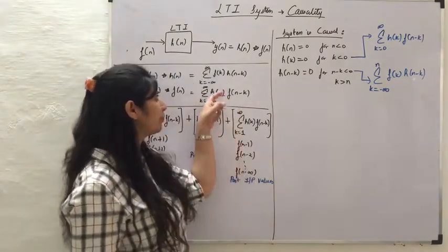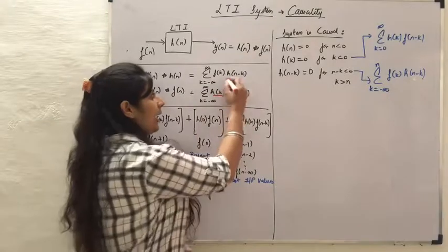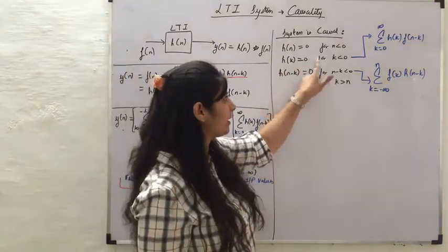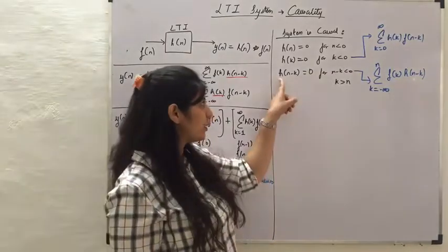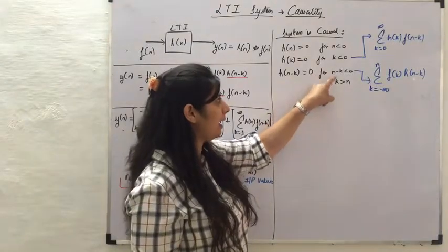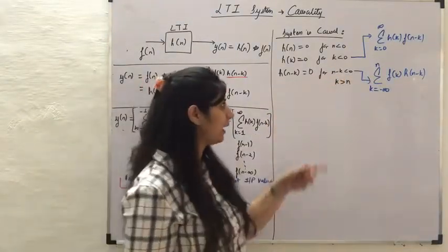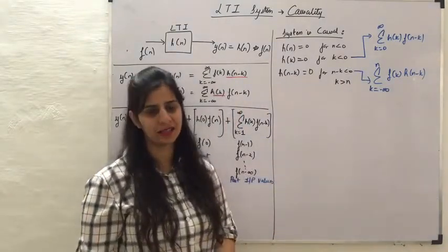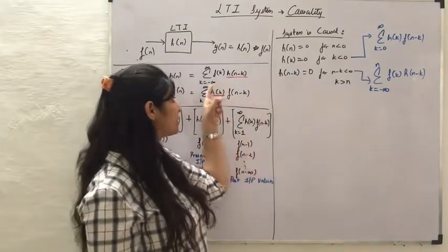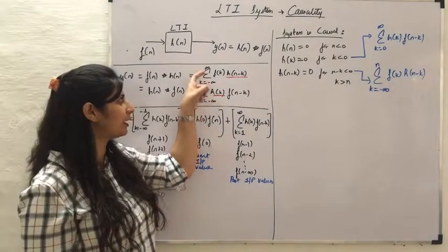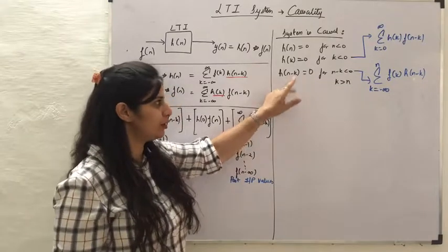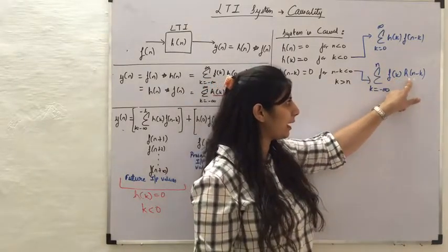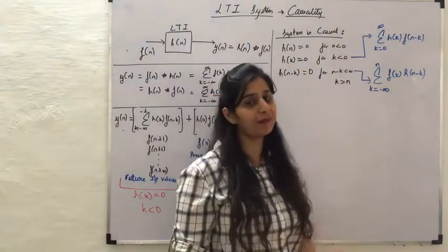The next expression uses H(N minus K). When H is in the form H(N minus K), it equals 0 for N minus K less than 0 to define a causal system, which means H(N minus K) equals 0 for K greater than N. So this summation will have values only from K equals minus infinity to N, and the convolution can be written as summation from K equals minus infinity to N of F(K) times H(N minus K). Both these definitions define a causal system.